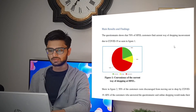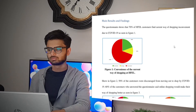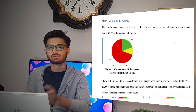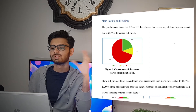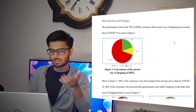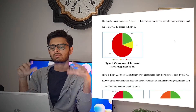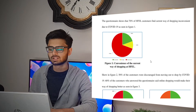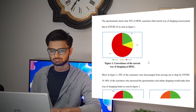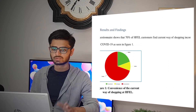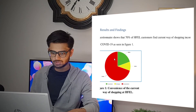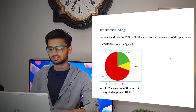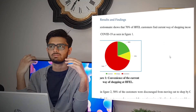Now comes the main results and findings. This is where you will paste your pie charts, bar graphs, and all the infographics you used in your IA. All the data you received from your primary research that is visually represented should come here. What I did is first talk about the outcome I got from that figure. For example, figure one shows the convenience of the current way of shopping at my organization, and the questionnaire shows that 70% of customers found the current way of shopping inconvenient due to COVID-19.